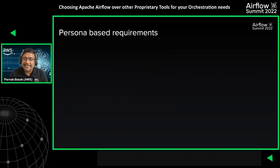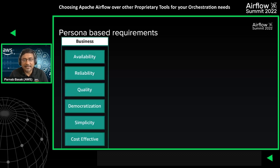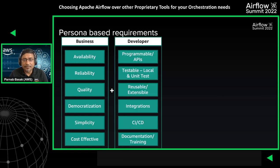Do note that these are more than just scripts scheduled by your favorite crontab-type OS schedulers. Finding the right tool is still an art since your organization might have different personas with different sets of requirements. The priority for the business team is that the tool should be available, reliable, and cost-effective. It should be simple to use such that it can be democratized to all.